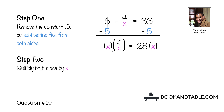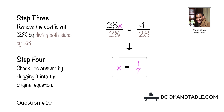Step two: we want to bring x from the denominator up to the numerator. Multiply both sides by x — the x's on the left cancel out, leaving us with just 4, while 28 times x gives us 28x. Step three: remove the coefficient 28 by dividing both sides by 28, so we wind up with x is equal to 4 divided by 28, which is x is equal to 1/7.